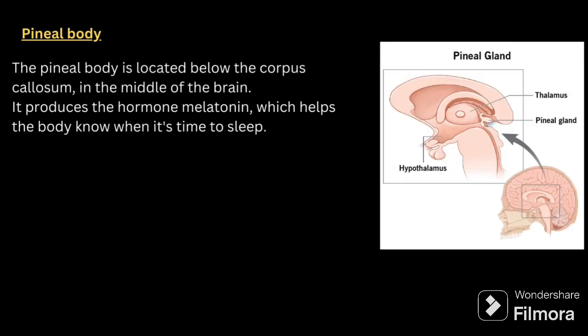Next we will be seeing about the second part, that is the pineal body. The pineal body is located below the corpus callosum in the middle of the brain. It produces the hormone melatonin, which helps the body know when it's time to sleep. In the diagram you can see the hypothalamus, thalamus and pineal body are clearly marked.